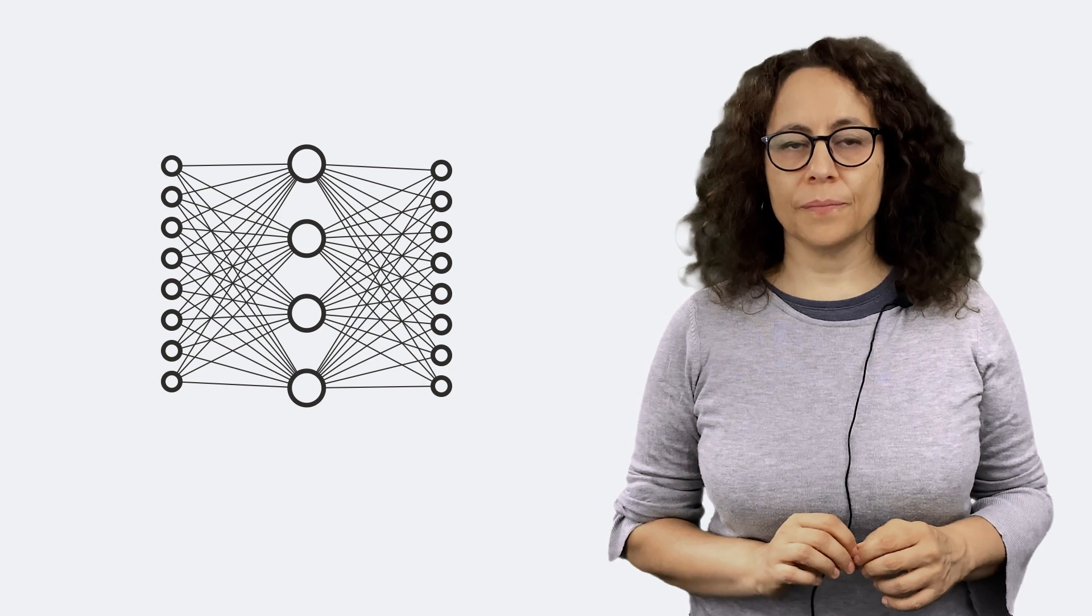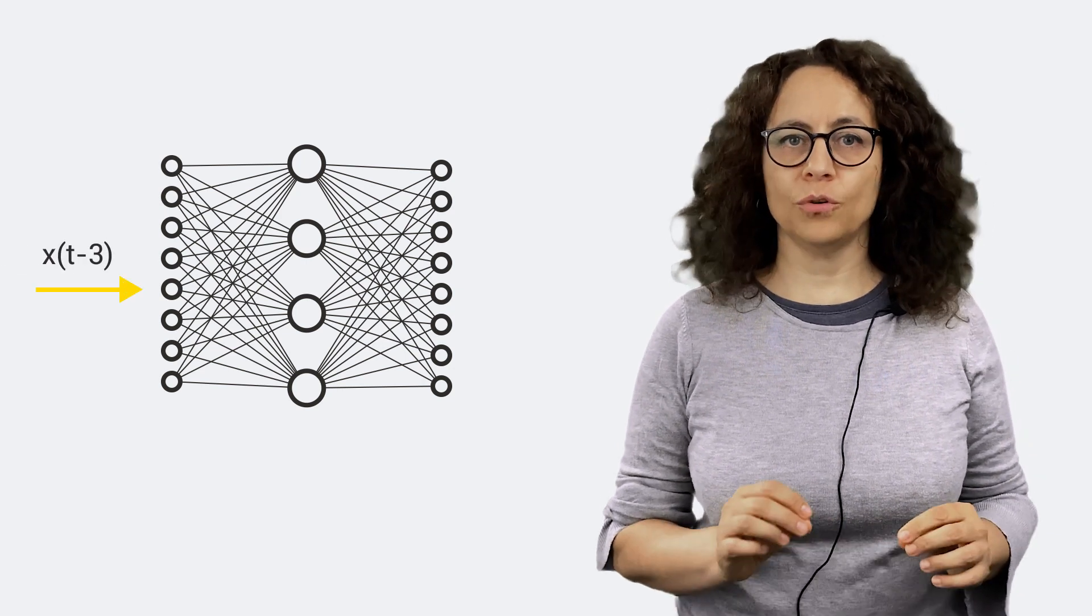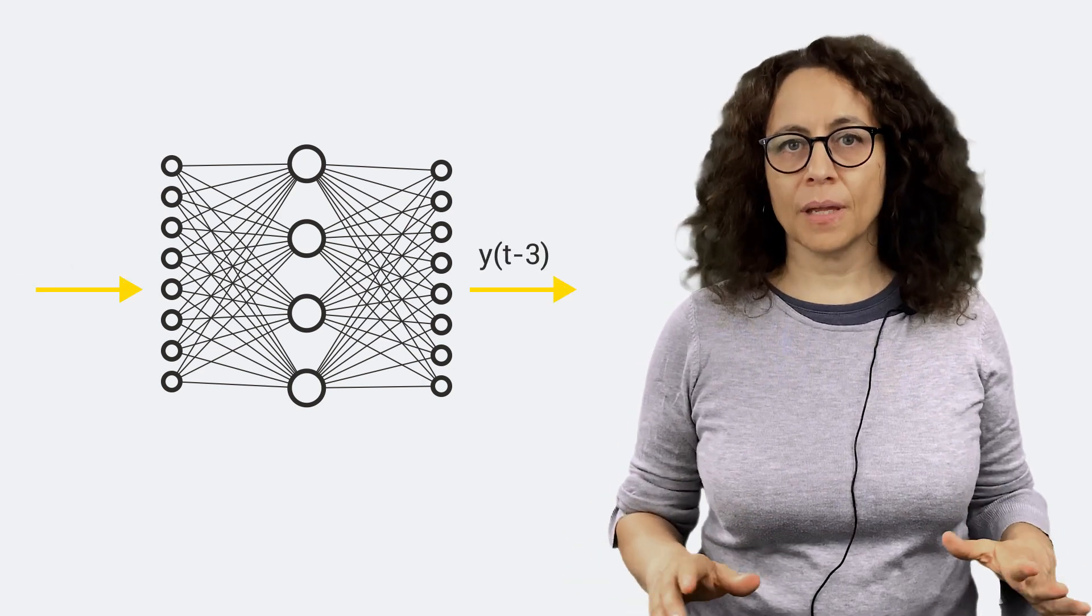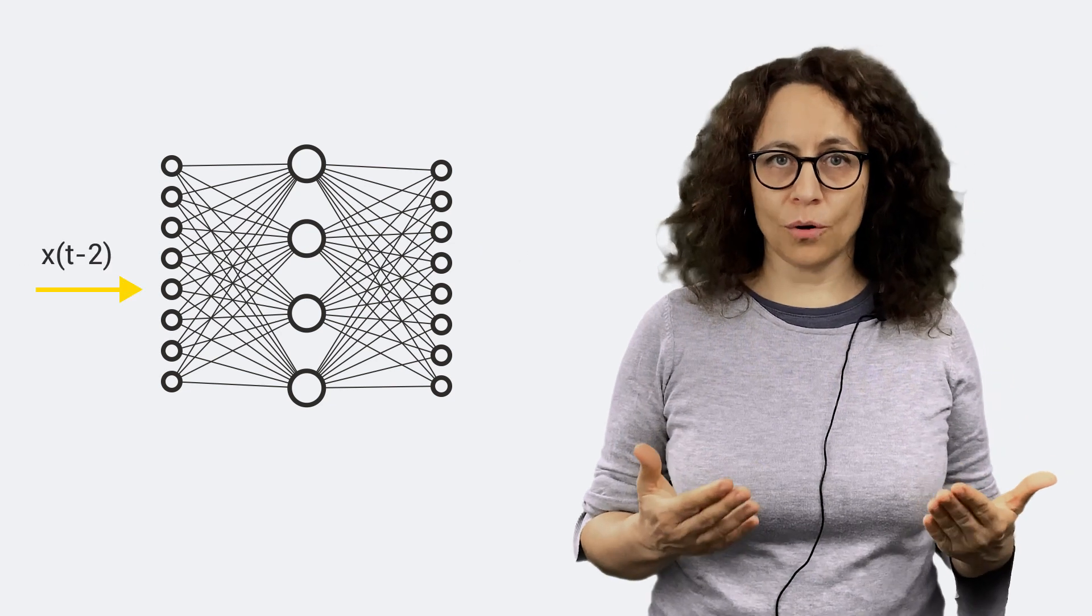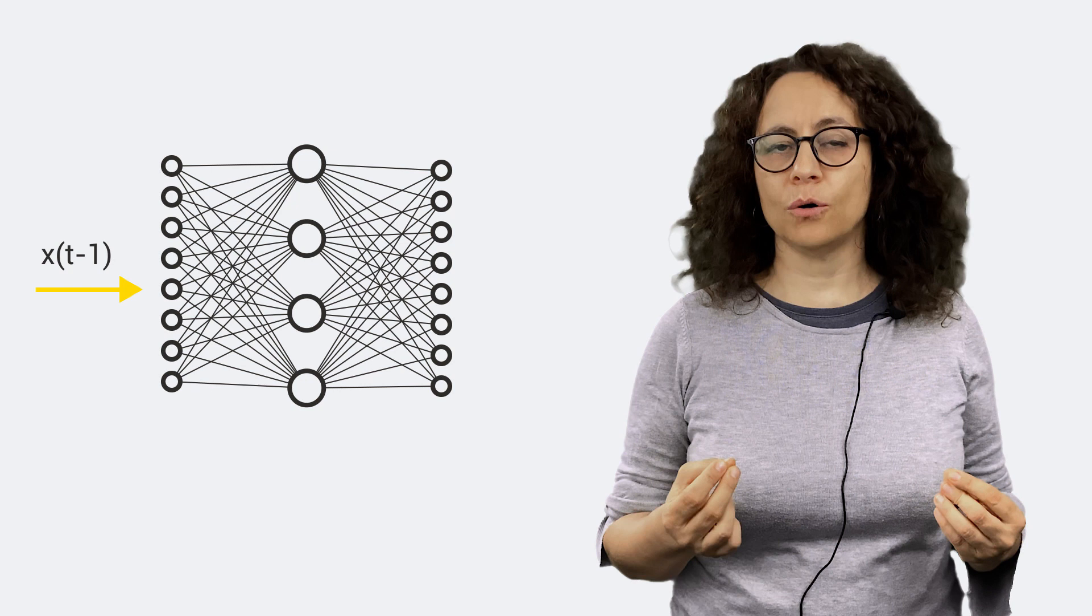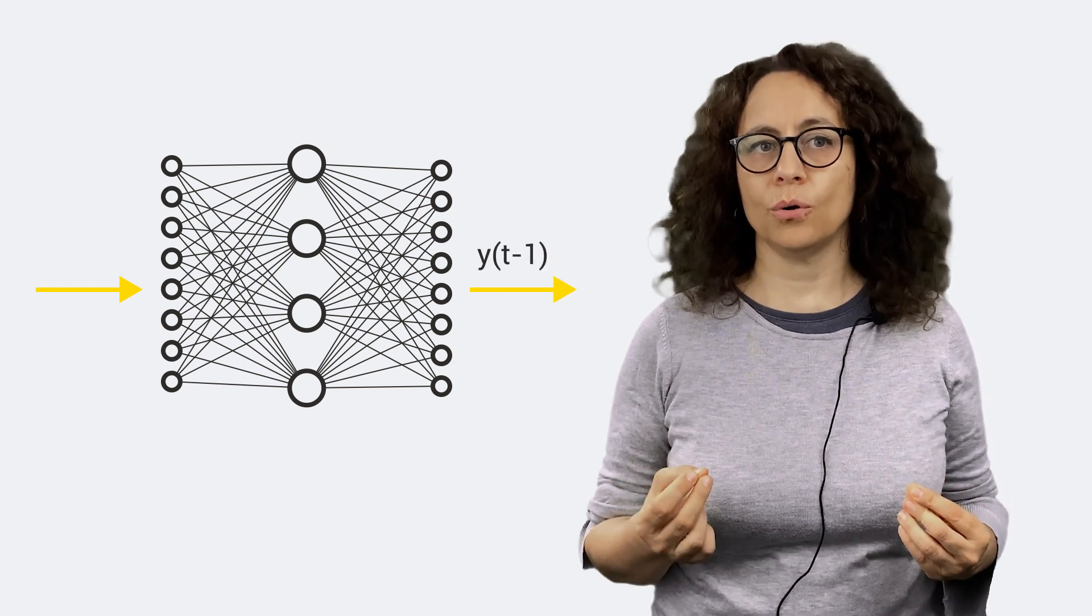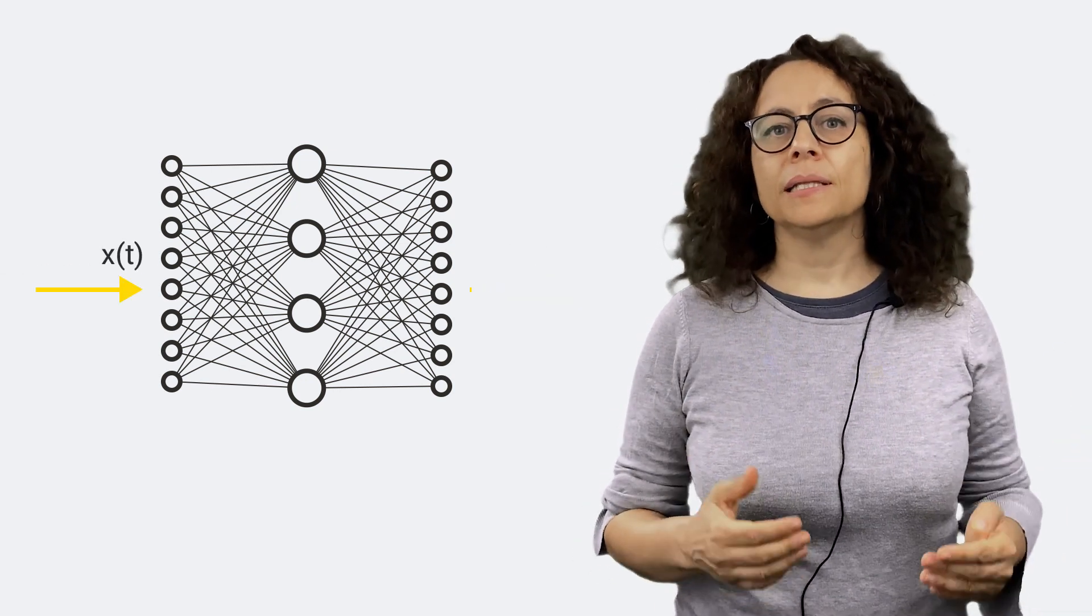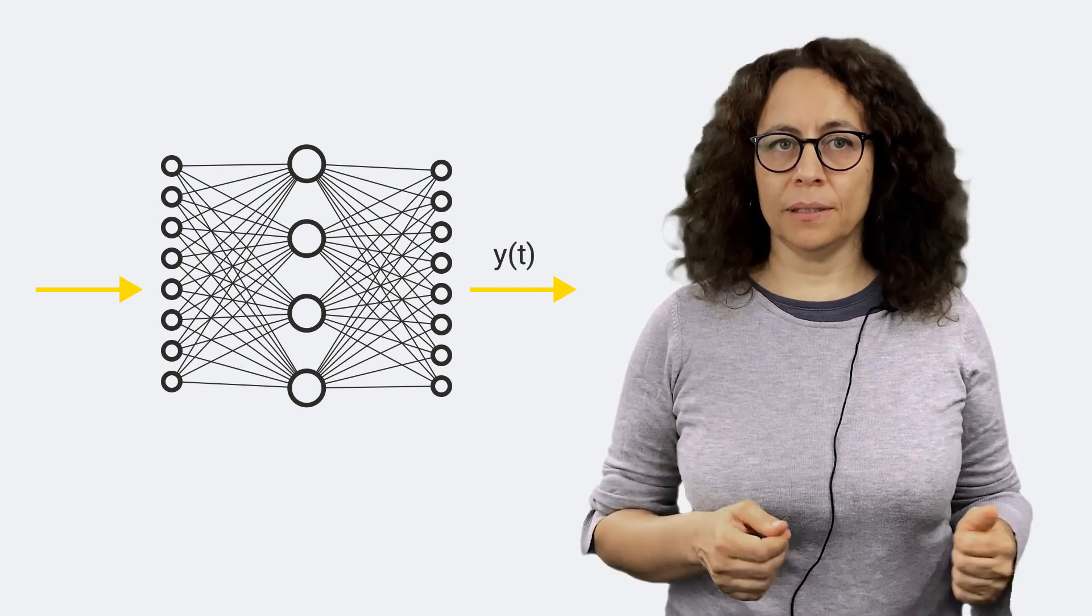Let's move one step backwards. Fully connected feed-forward neural networks are great, but they can solve only static problems. That means problems where the output depends only on the current input. The output at time t depends on the input at time t.